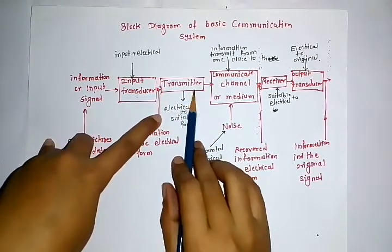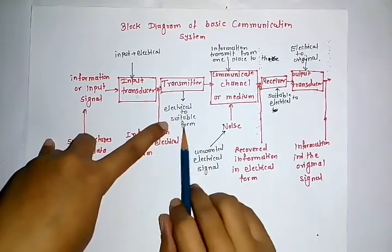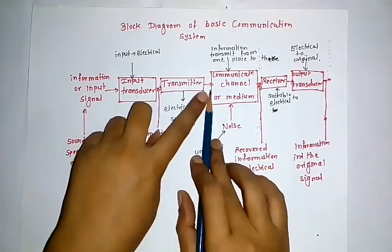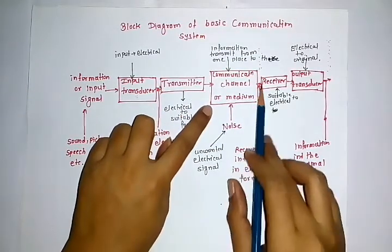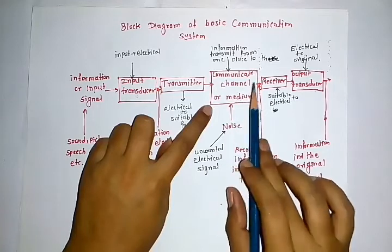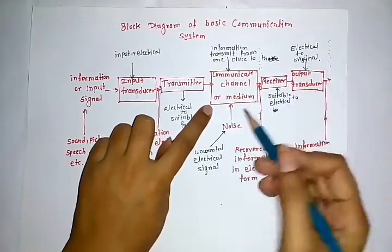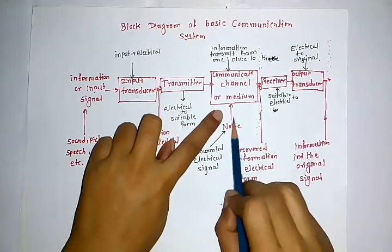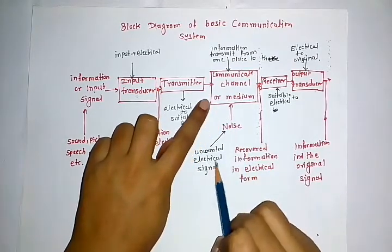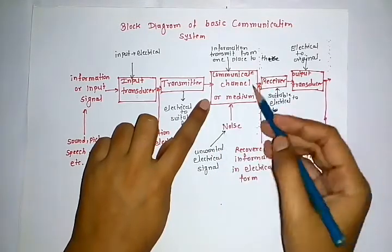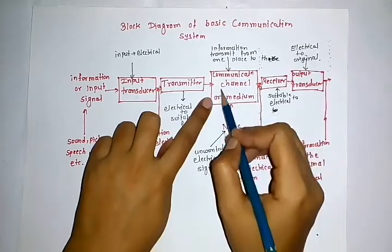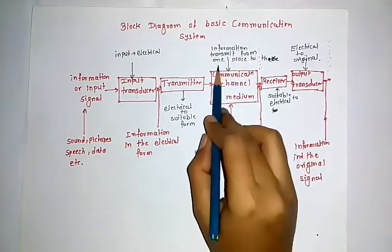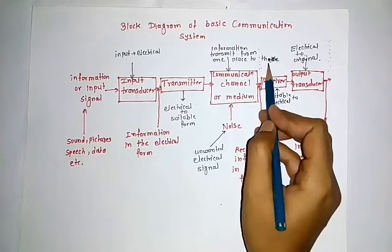The transmitter converts the electrical signal to a suitable form. This suitable form information is given to the communication channel or medium. Noise, which is the unwanted electrical signal, gets added to the communication channel. The function of the communication channel is to transmit information from one place to another.